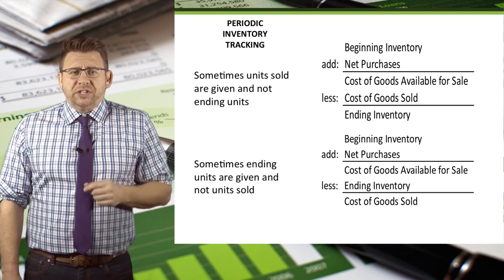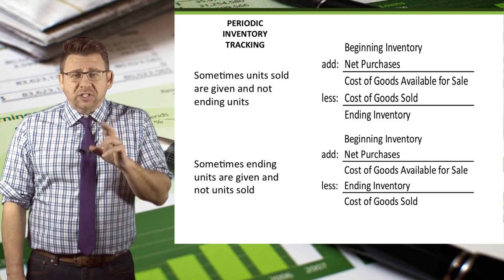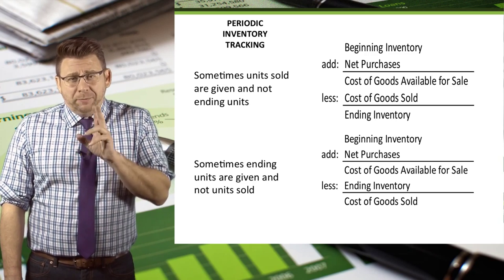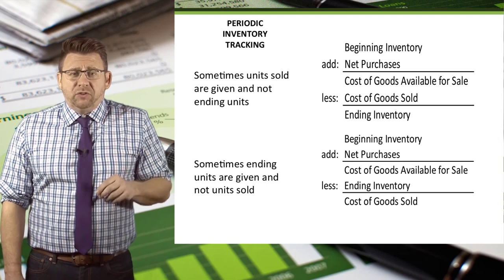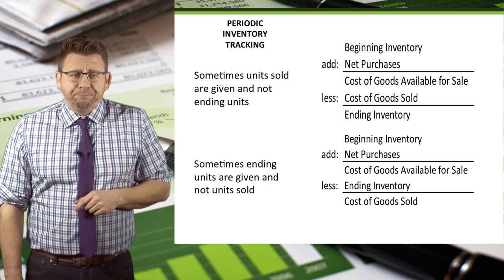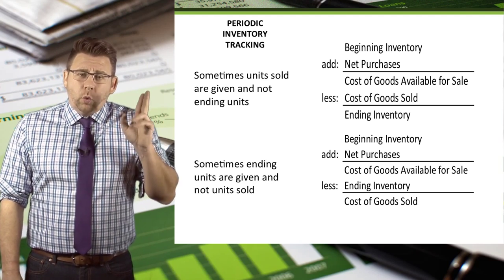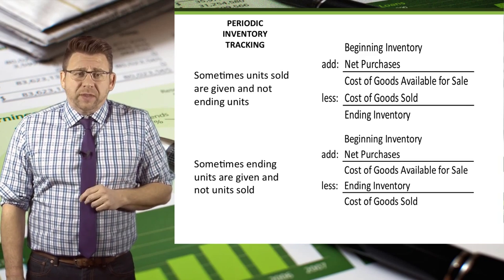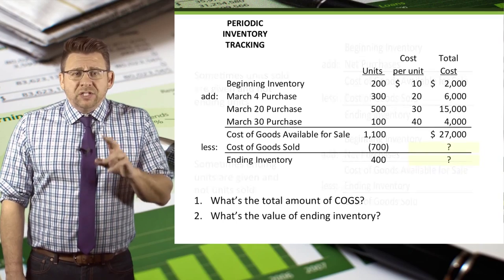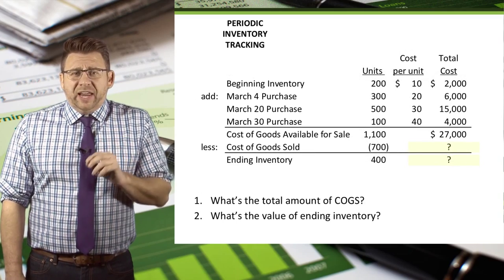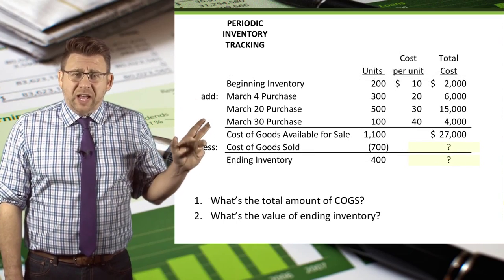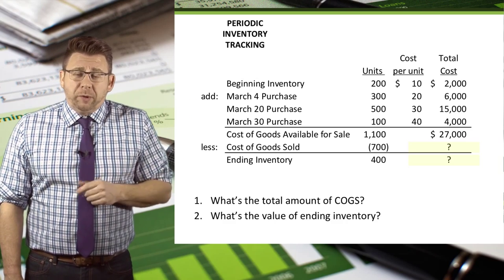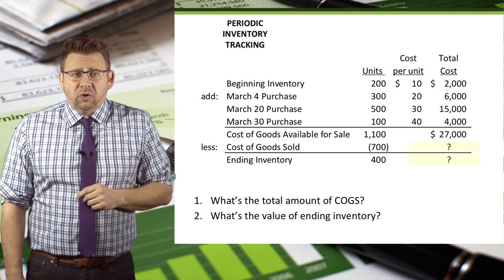This is important to note because sometimes units sold are given and not ending units, while other times ending units are given and not units sold. In real life, we know the ending units of inventory because we physically counted them. I chose to solve for ending inventory because we were given the units sold.